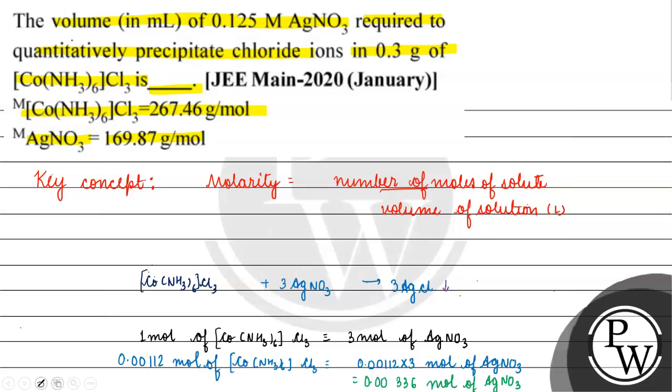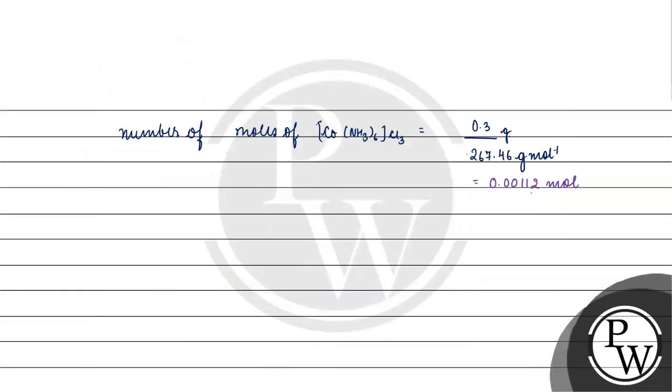This has come to us. Now we have moles, we have molarity in the solution - molarity is 0.125 molar, so the volume nikaal sakte hain. Number of moles of solute by molarity will give us the volume of the solution. What will happen? Volume of the solution in liters will be equal to...